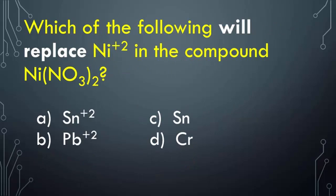Which of the following will replace the nickel ion in the compound nickel nitrate? You can determine that chromium is going to be your answer. Why? Chromium is much higher up on the activity series and it's above nickel.